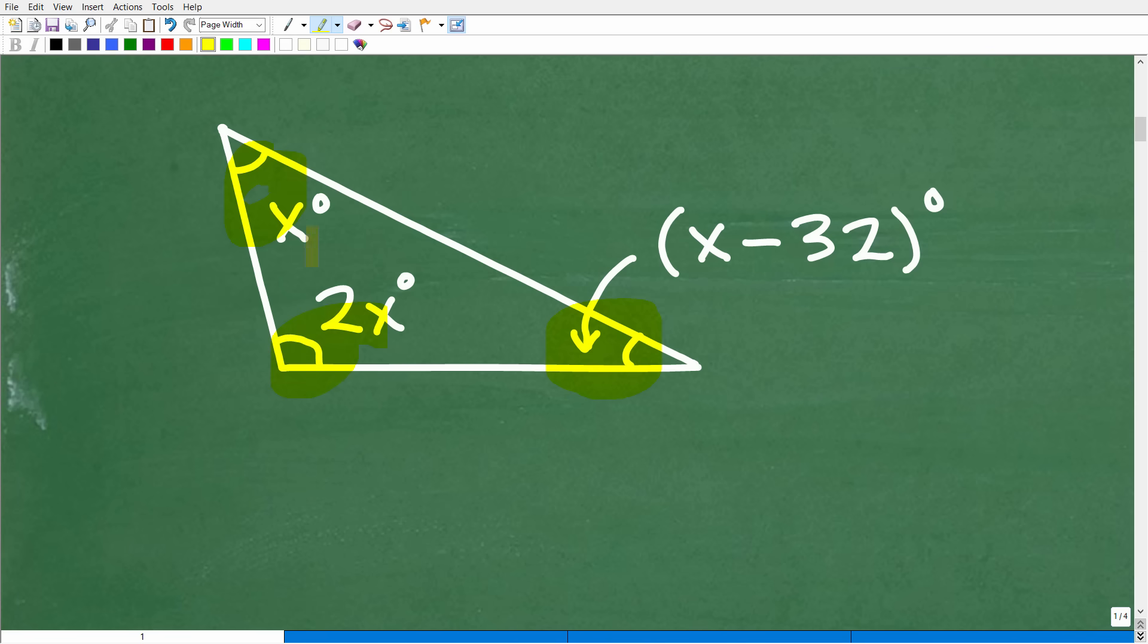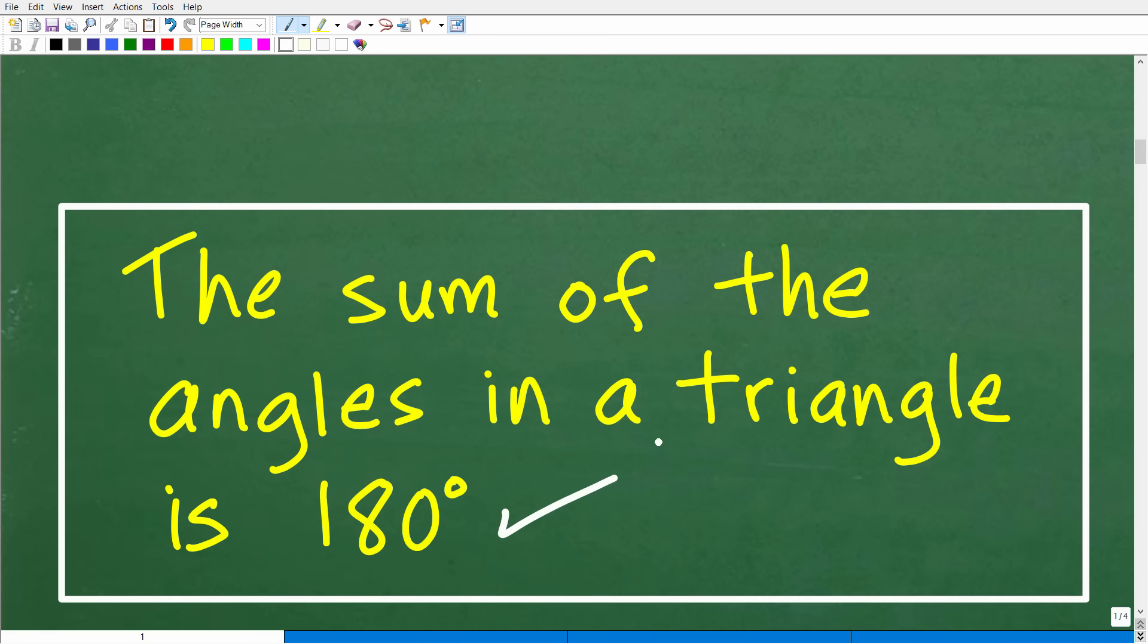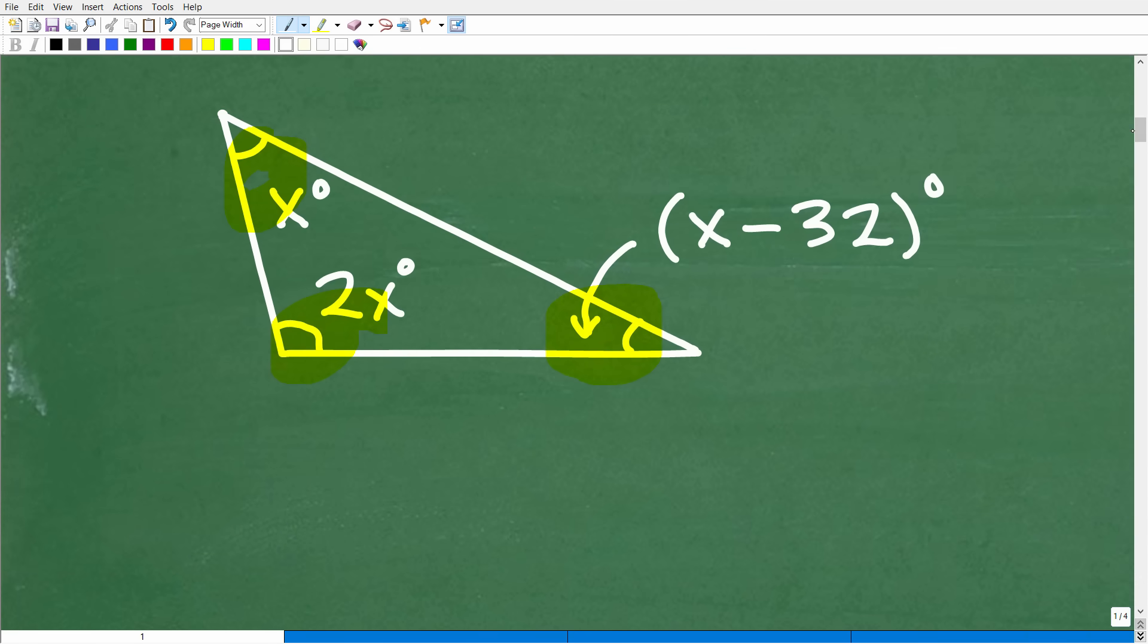And that property is the following. It has to do with the sum of the angles of any triangle. All right, well, what is it? Well, let me go ahead and show it to you. The sum of the angles in a triangle is always 180 degrees. This is something that you absolutely need to know. Probably one of the most basic properties of triangles.